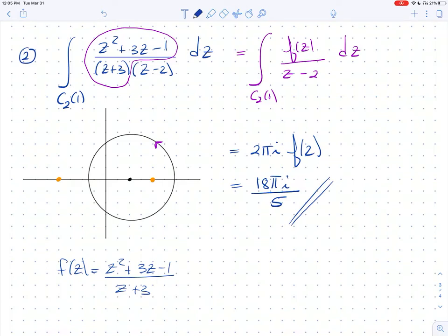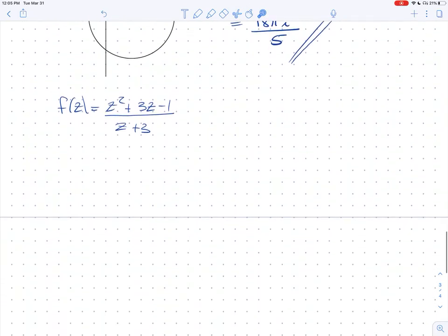The key there was noticing that even though z plus 3 is downstairs, it has the singularity, it has a zero outside of our curve. So, it doesn't really matter. You can include that in with your function and make it work. Let's do one more problem. This one is a little bit trickier, probably the trickiest one so far.